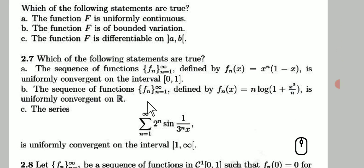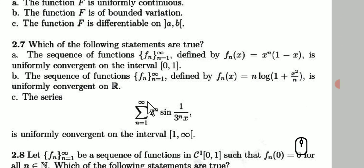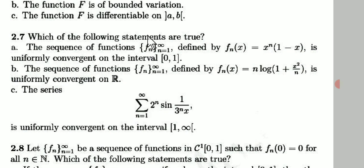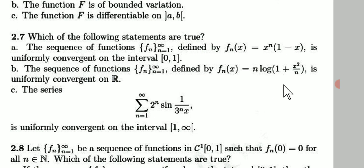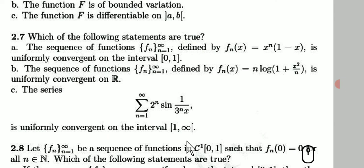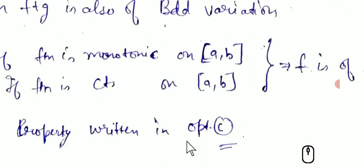Question 2.7: we are given a sequence of functions and must determine uniform convergence. First: f_n(x) = x^n(1−x). Second: f_n(x) = n·log(1 + x²/n). Third: 2^n · sin(1/3^n · x) on [1, ∞). Let us look at the solutions.